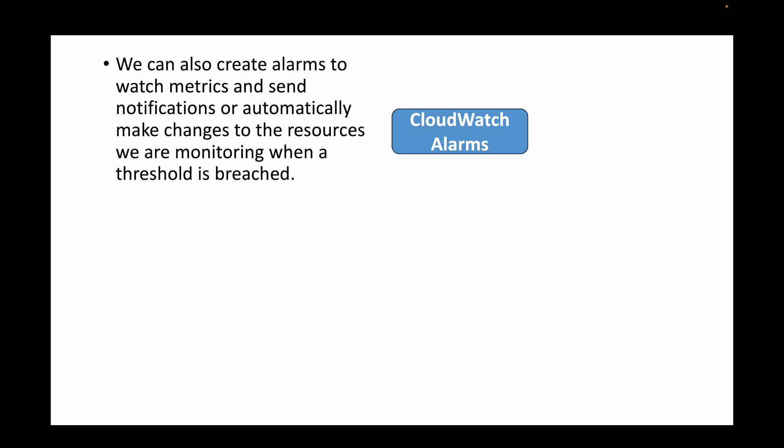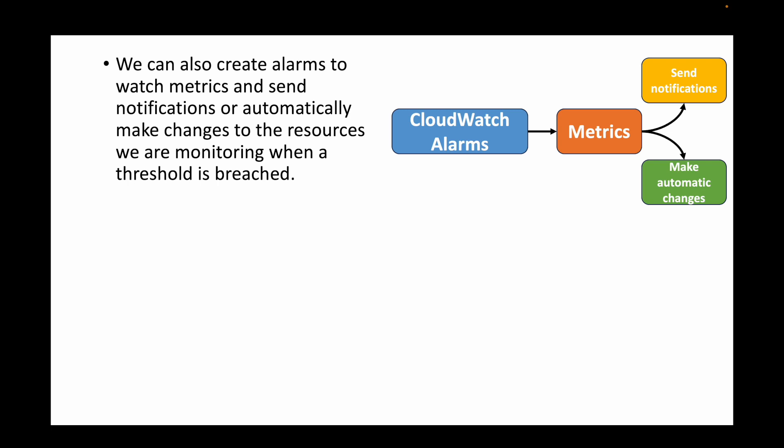We can also create alarms. Alarms can be used to monitor a particular metric like CPU utilization and then take action on that metric. For example, if the CPU utilization reaches a threshold of 80% or 90%, we can define some actions. The actions can be as simple as sending out an email notification to the team responsible for managing those resources, or we can make automatic changes like having an auto scaling group launch new instances — scaling up and scaling down.